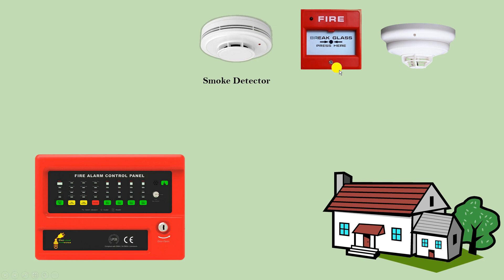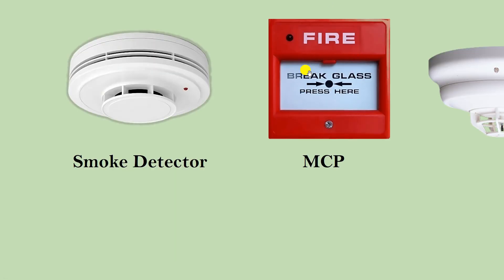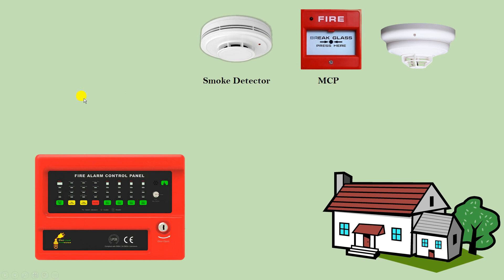After this, here I have an MCP. The full form of MCP is Manual Call Point. If you want to tell manually that there's a fire, this type of MCP is used. In this device you can see it is written 'break glass, press here.' If the detector didn't work or you want to manually raise the alarm, simply break this glass.